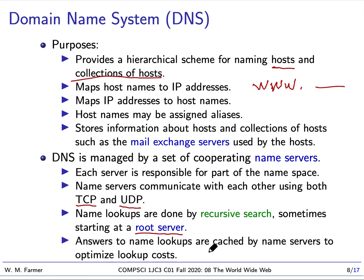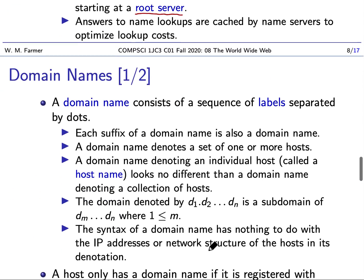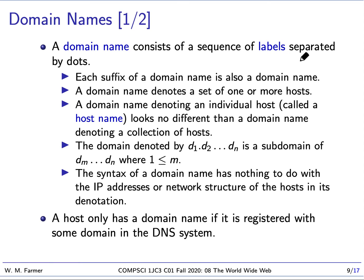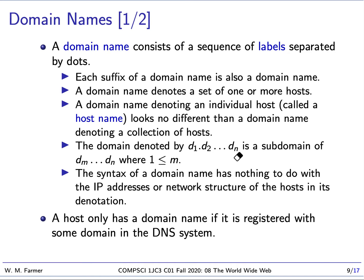When answers to name lookups are found, these names are often cached so you don't have to go through the recursive search over and over again. Domain names consist of a sequence of labels separated by dots. IP addresses are numbers separated by dots, but the domain name structure has nothing to do with IP address structure. Each suffix is also a domain name, and the whole name is a subdomain of its suffixes. A domain name can refer to an individual host or a group of hosts.